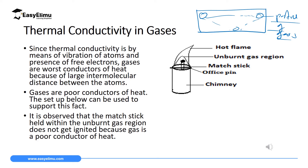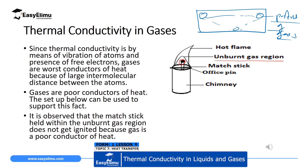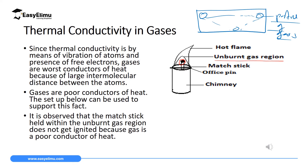To investigate this experimentally, you take a match stick and put it inside the innermost part of a non-luminous flame. From chemistry, the innermost zone of a non-luminous flame is called the almost-colorless zone, which contains unburnt gases. If you put the match stick there, you will realize that even though the non-luminous flame is one of the hottest flames, the match stick will not be ignited. The heat in the adjacent greenish-blue zone cannot be conducted inward to ignite the match stick. This means gases are very poor conductors of heat.